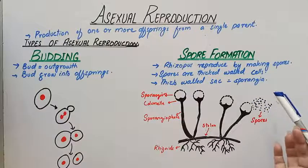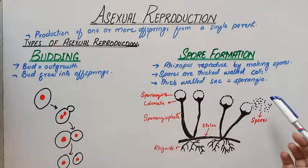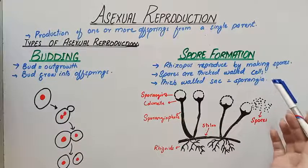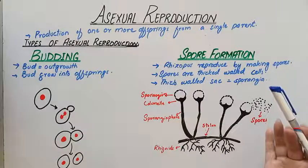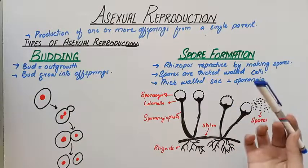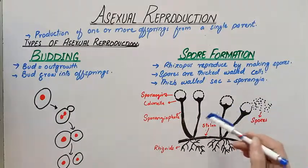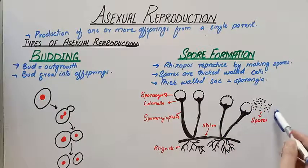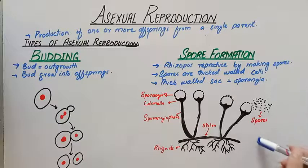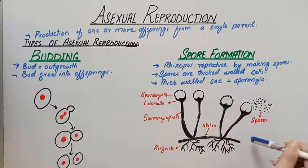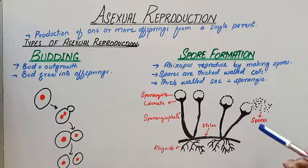A simple example: when you take bread, fungus originates on one part of the bread and reproduces. Then spores spread to other parts of the bread, infecting the whole loaf. This is how the entire bread becomes infected with fungus.